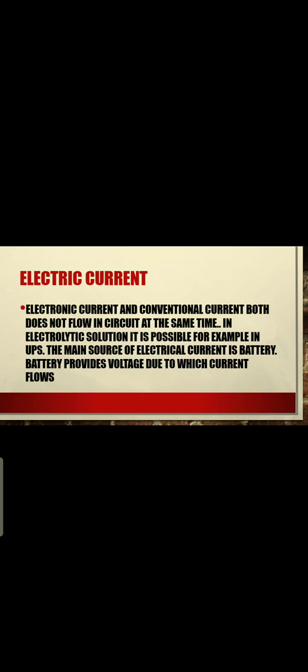Electronic current and conventional current both do not flow in a circuit at the same time, but in an electrolytic solution it is possible — for example in a UPS. When electricity goes out at home, the UPS runs, and basically an electrolytic solution is present in the UPS, so both electronic and conventional current work at the same time. The main source of electrical energy is the battery, which provides voltage due to which current flows.